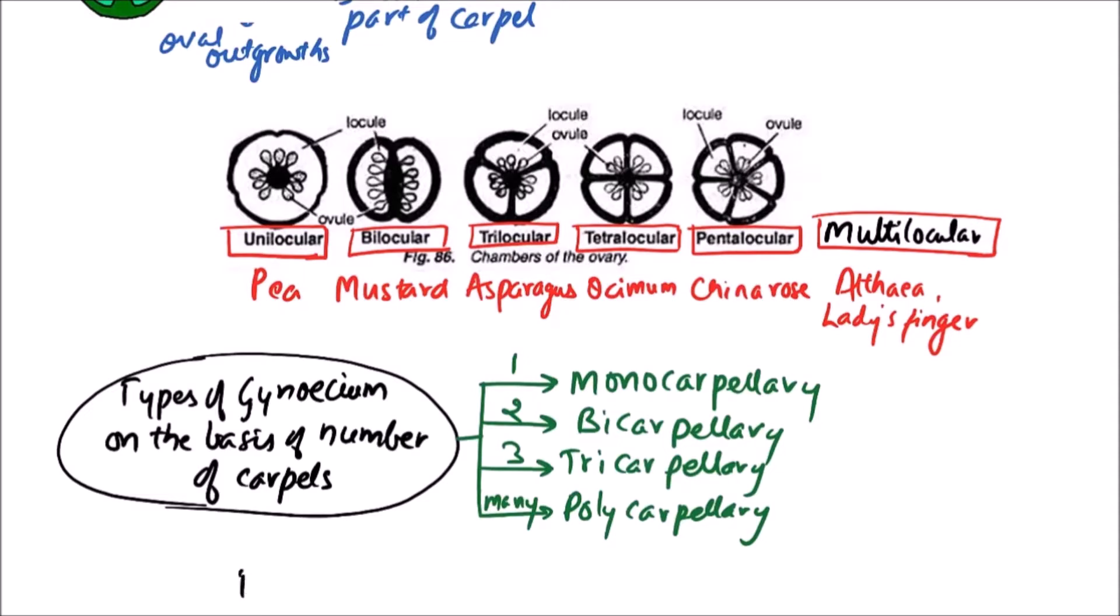If the carpels in ovaries are free, then this condition is known as apocarpous condition, and the ovary is termed as apocarpous ovary.